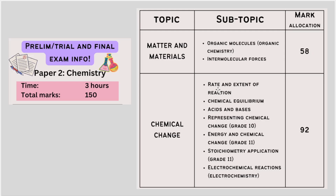You'll see, for example, that acids and bases questions are usually 15 to 20 marks, sometimes a little more. Then for electrochemistry, you get a galvanic question and an electrolytic question — around 10 to 15 marks per question. So it's a good idea to get familiar with this and practice as many past papers as possible.